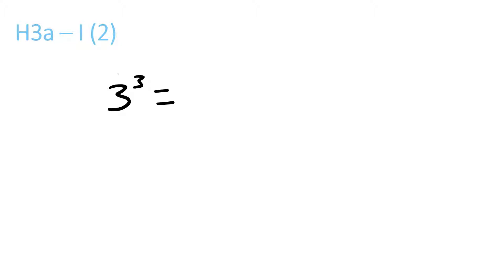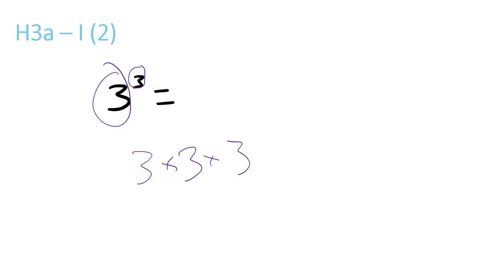This one says 3 and the little 3 up there, so it means 3 times 3 times 3. 3 times 3 is 9, times 3 — 9 times 3 equals 27.